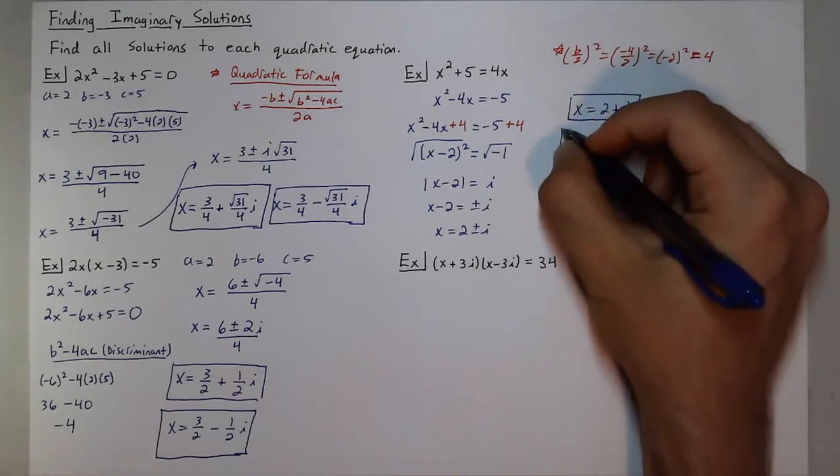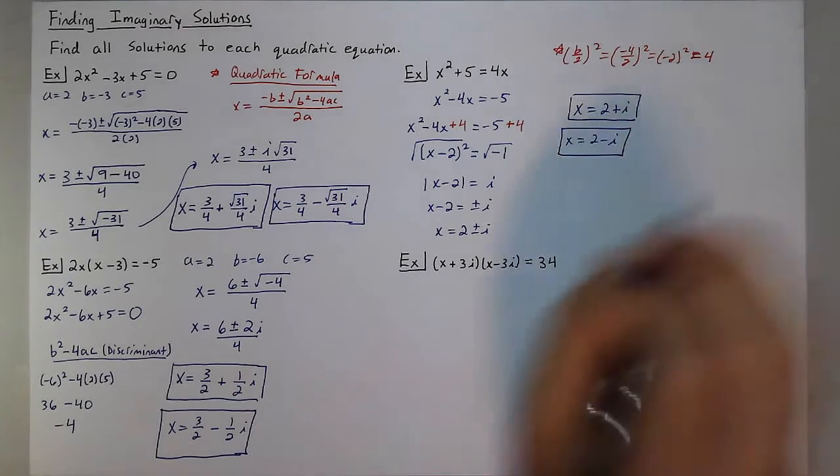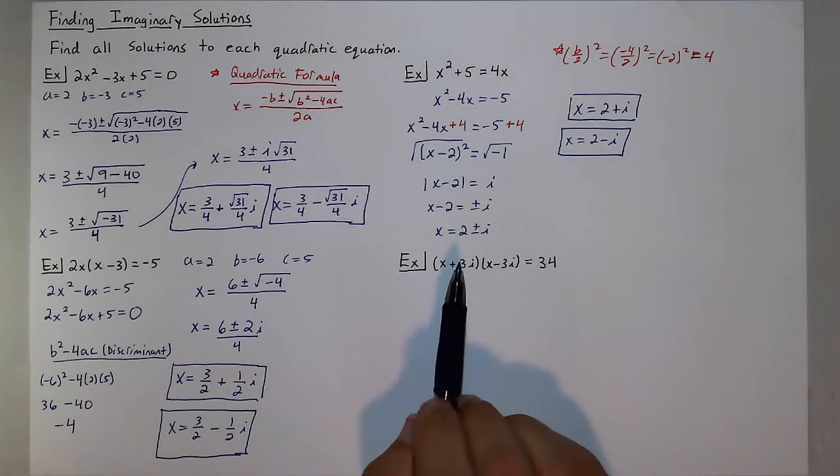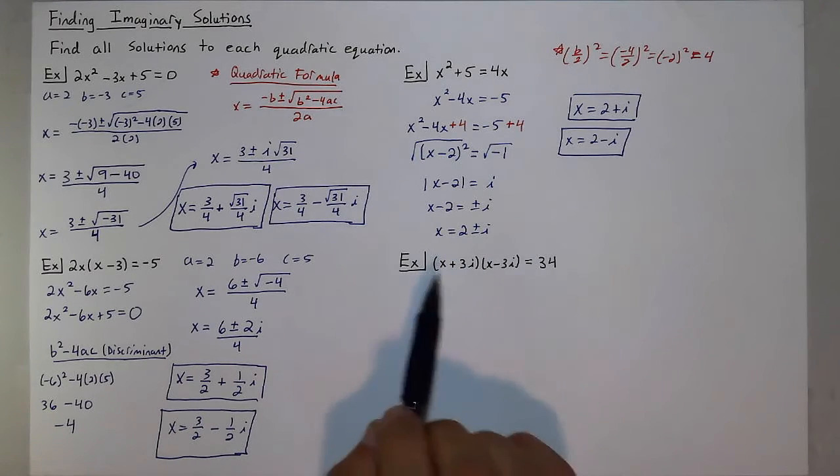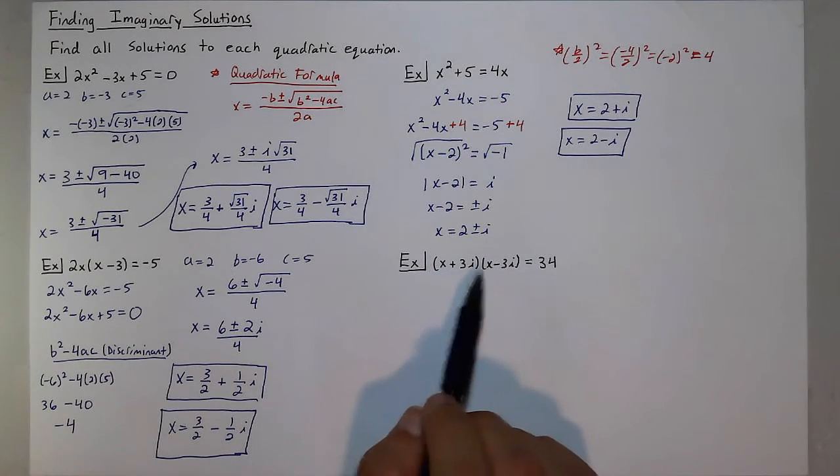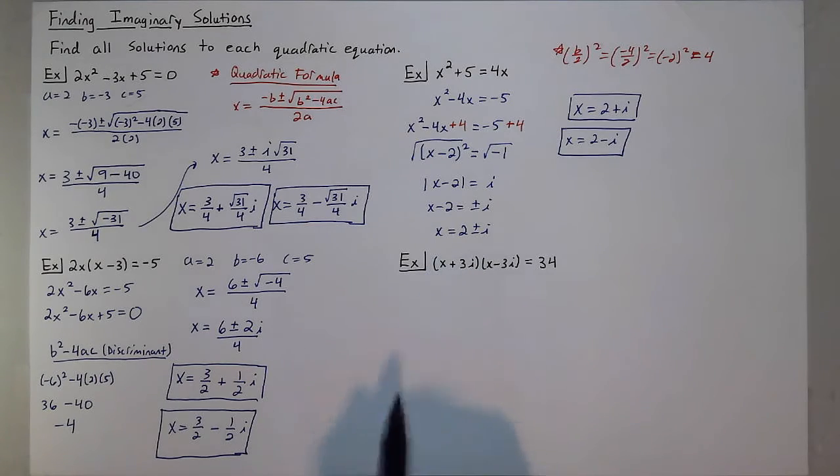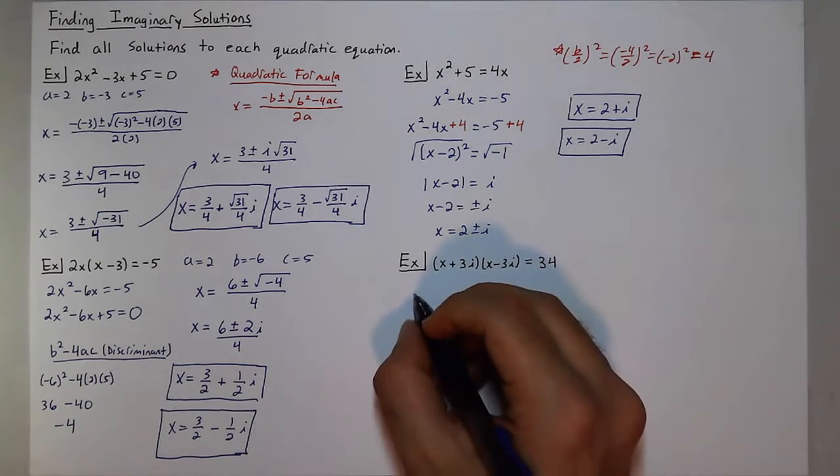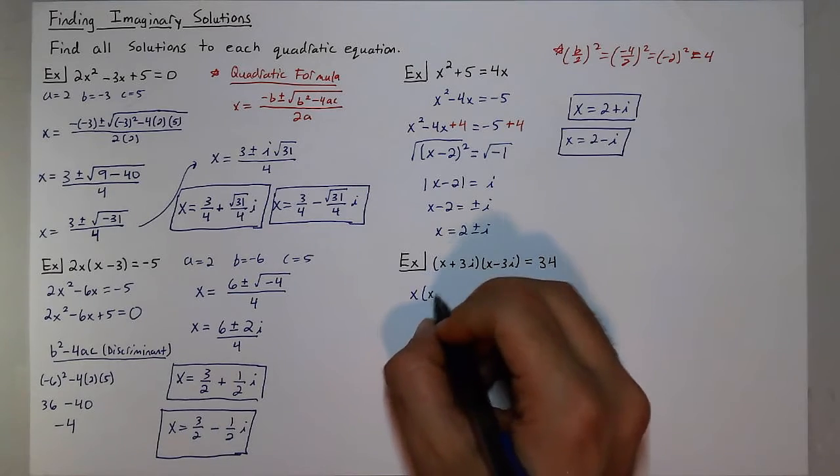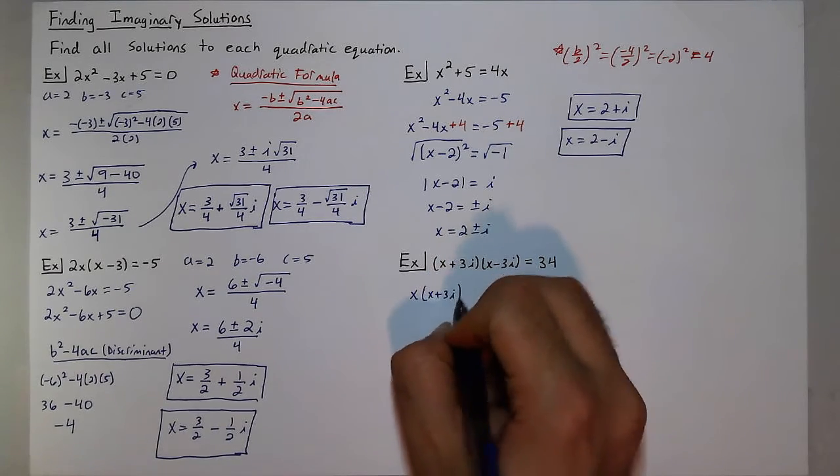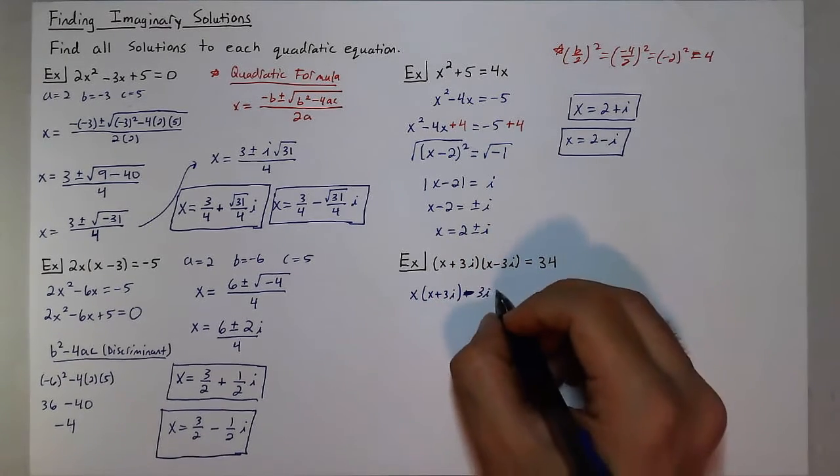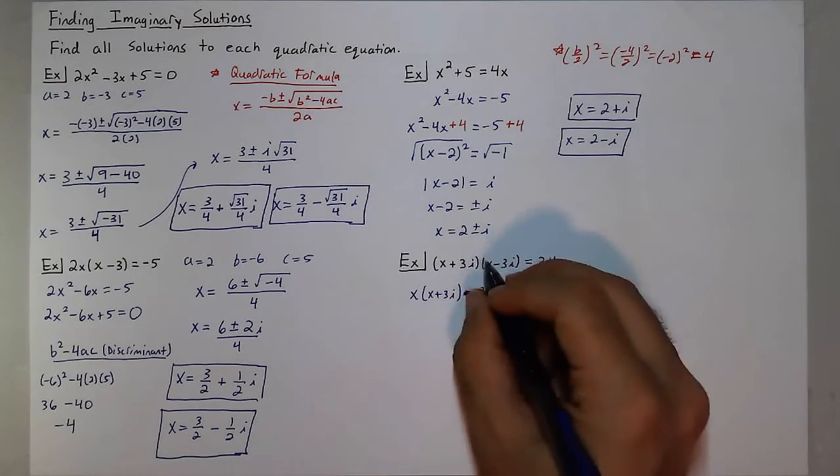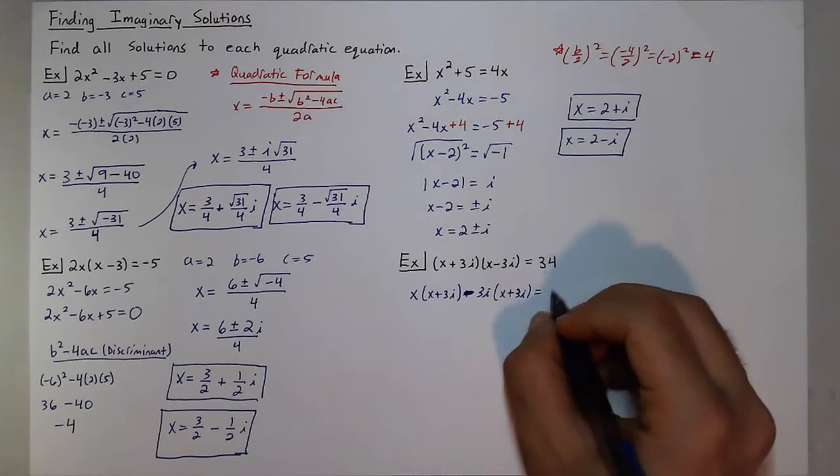Now sometimes your equation might have imaginary numbers too, and sometimes that can make it more complicated to solve. But in this case, I actually see my two factors are complex conjugates, meaning if I were to multiply these out, the i would disappear. So let's actually distribute the (x - 3i)(x + 3i) and simplify this before I start solving. Times (x + 3i). Again, just distributing that to each term. Equals 34.